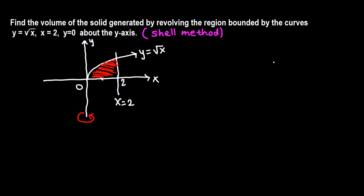In any case — disk, washer, or shell method — the volume V is given by the integral of the area of the representative, A(x) dx or A(y) dy, from a to b. In the shell method, we write the representative rectangle parallel to the axis of rotation. Since we are revolving about the y-axis, the sample rectangle will be parallel to the y-axis.